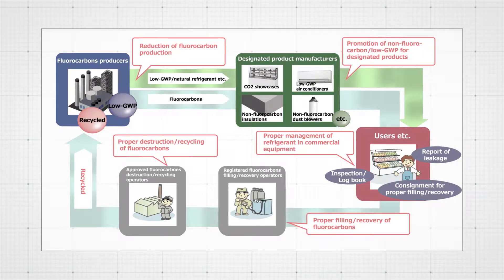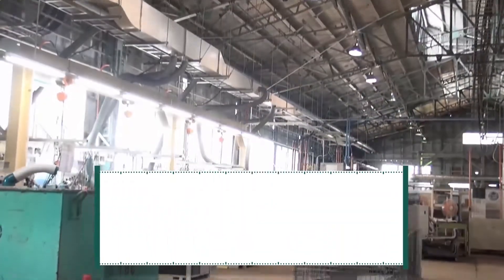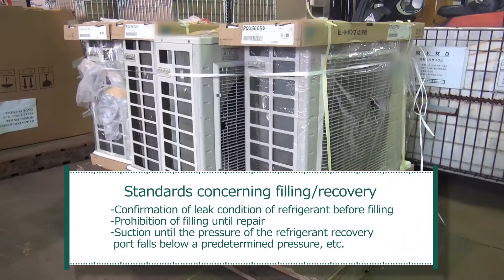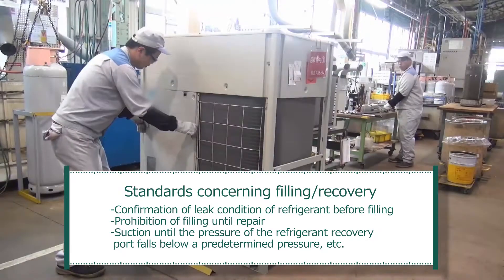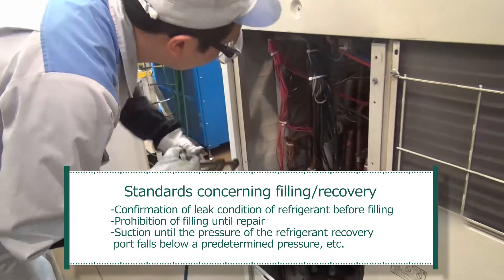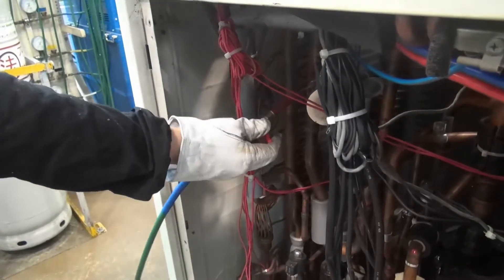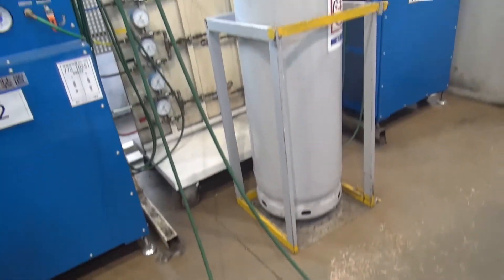Now let's move on to filling and recovery operators' efforts. When repairing, maintaining, or disposing of equipment, they may fill or recover fluorocarbon. This process must be done by a professional operator registered with prefectural authorities. Standards regarding filling and recovery include confirmation of the leak condition of refrigerant before filling, prohibition of filling until repair is completed, and suction until the pressure of the refrigerant recovery port falls below a predetermined pressure. Operators must follow these standards during filling and recovery.